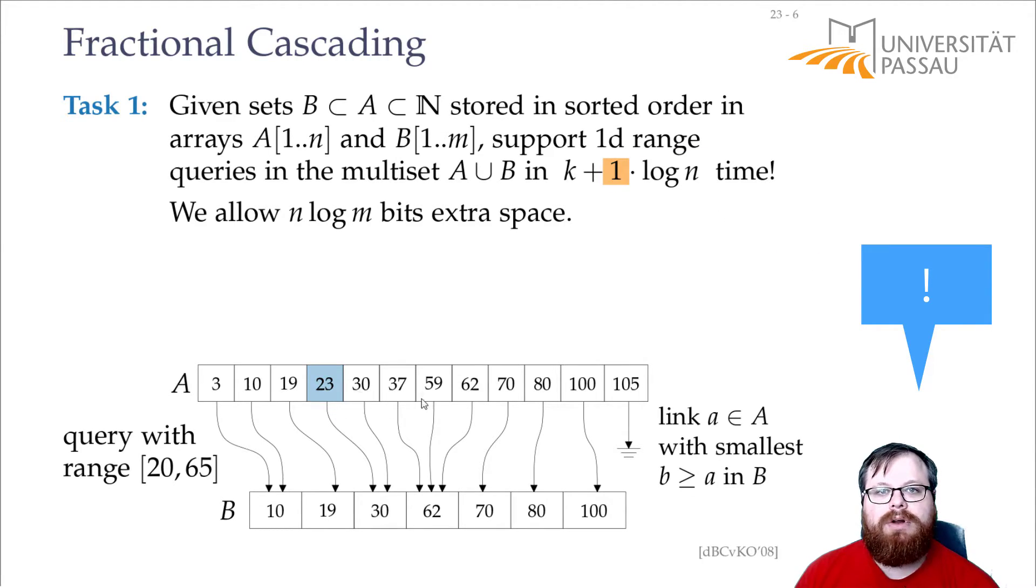And then we only have to walk through this array to report all the points. And at the same time, take this connection down here and report all the points that lie down there. So, we walk through the array A, report all the points. Then we take the connection, walk through B until we find the element that's pointed to from the end here. And then we find all the points that lie in B.